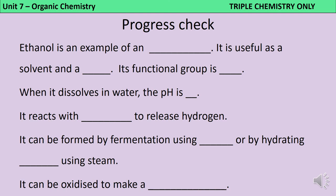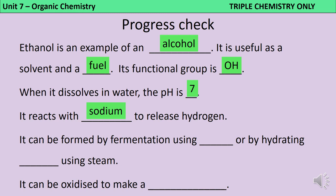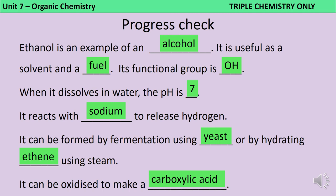Here's an opportunity to see how much of that you remember — pause the video and fill in the gaps now. Ethanol is an example of an alcohol. It's useful as a solvent and a fuel, and its functional group is OH. When it dissolves in water it forms a neutral solution, so the pH is seven, and it reacts with sodium to release hydrogen gas. It can be formed by fermentation by yeast or by hydrating ethene using steam, and it can be oxidized to make a carboxylic acid — specifically ethanoic acid.